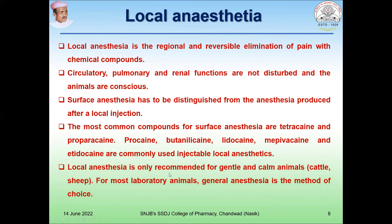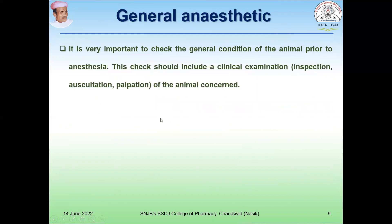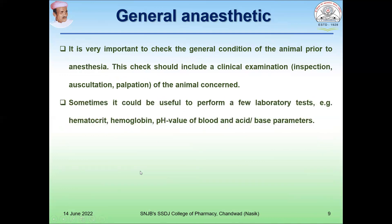Local anesthesia is only recommended for gentle and calm animals like cattle and sheep. For most laboratory animals, general anesthesia is the method of choice. It is important to check the general condition of animals prior to anesthesia, including clinical examination such as inspection, palpation, and auscultation. It may also be useful to perform laboratory tests like hematocrit, hemoglobin, blood pH, and acid-base balance before induction of general anesthesia.